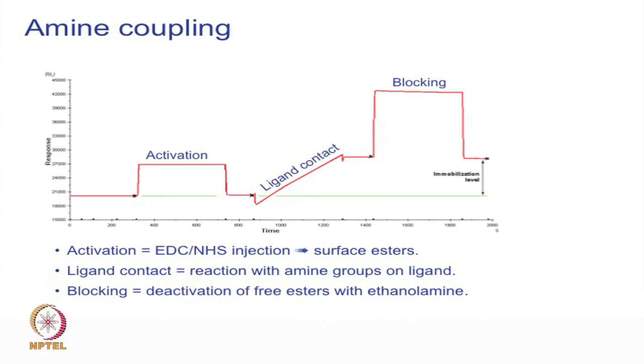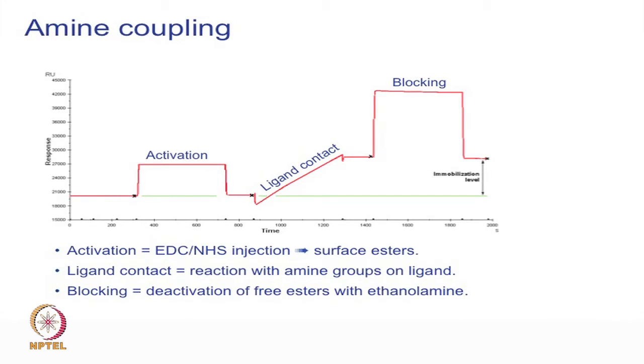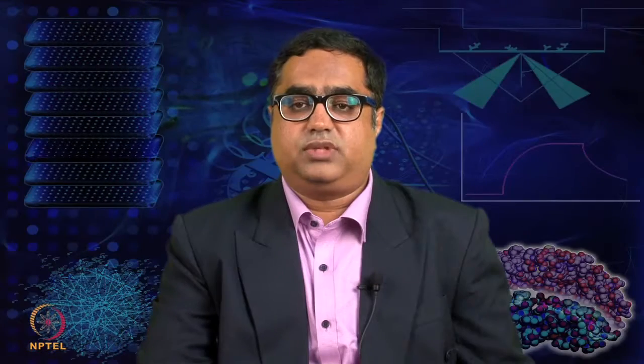One example is amine coupling, which is a very common way of coupling proteins on the sensor surface. The activation of the surface is done by chemicals EDC and NHS, which activate the surface esters. Molecules from the amine groups are covalently coupled on the surface, and extra activated groups are blocked by ethanolamine.